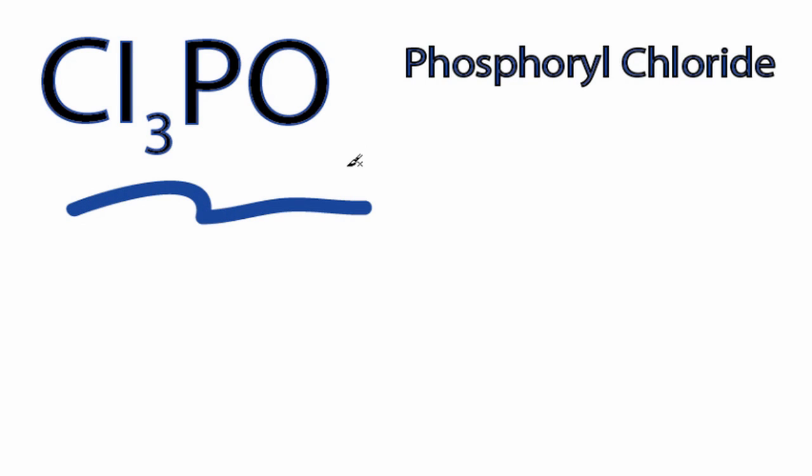This is the Cl3PO Lewis structure. For Cl3PO, we have a total of 32 valence electrons.